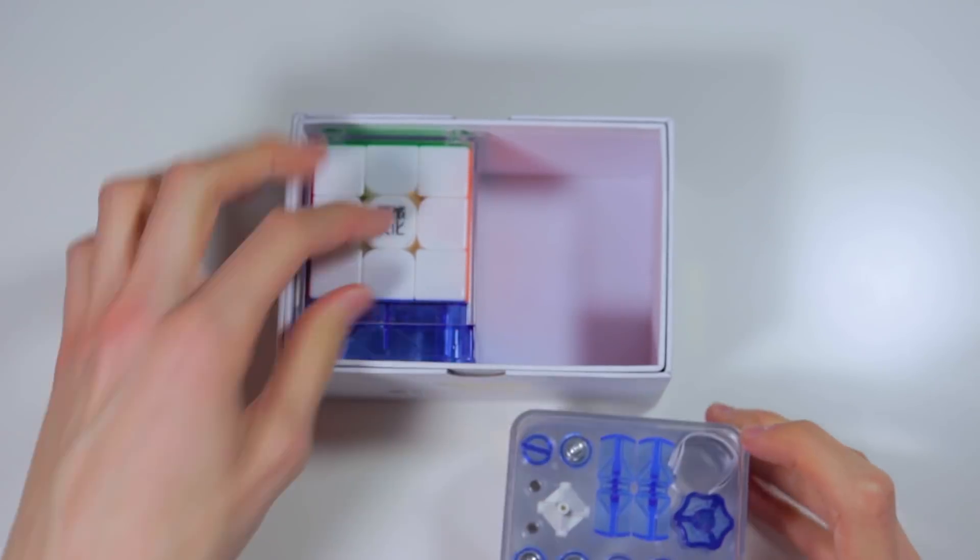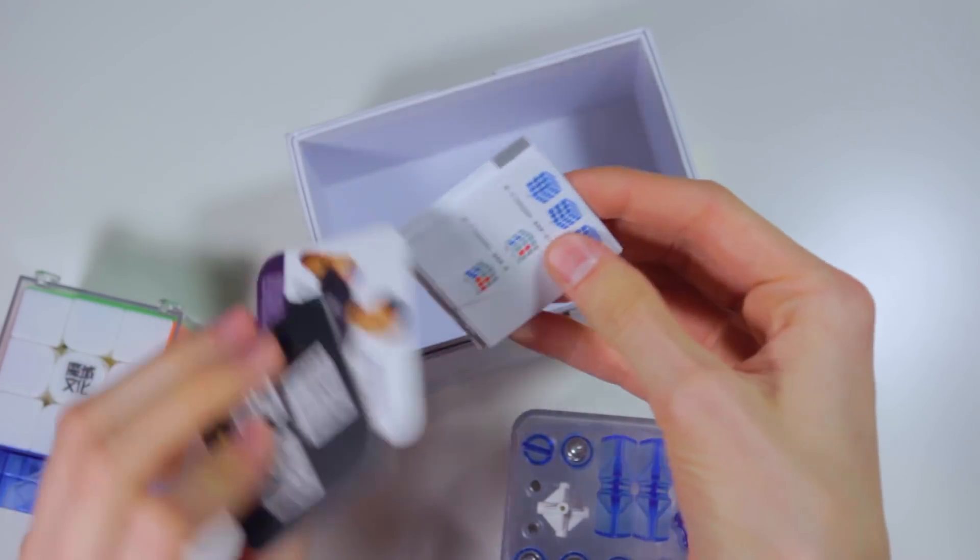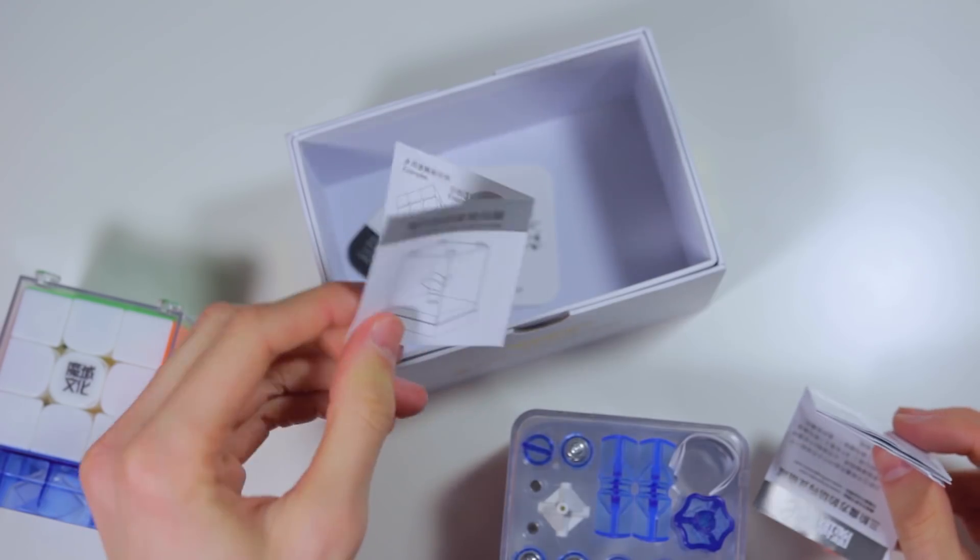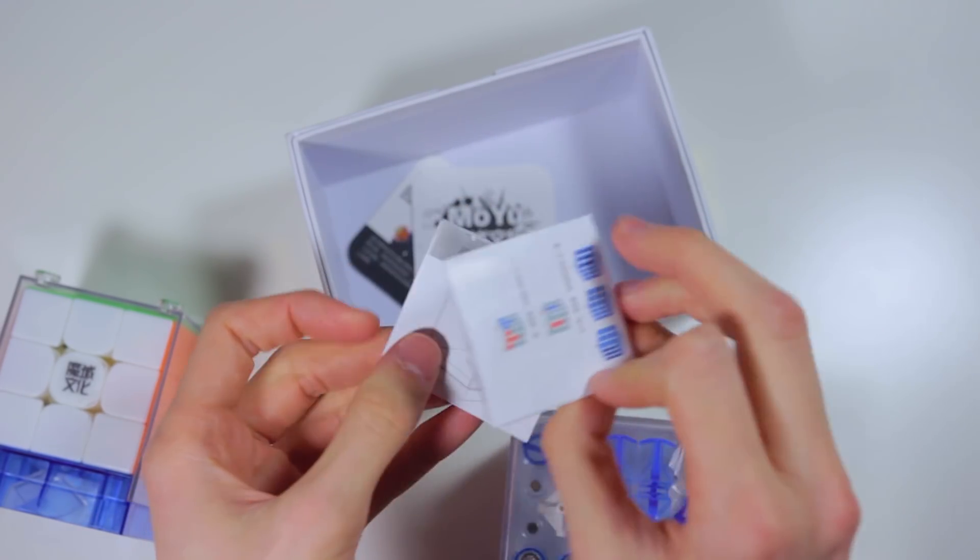I believe these are tensioning tools. We have the Moyu card. And I guess this thing here is showing how you can use the cube box to display your cube.